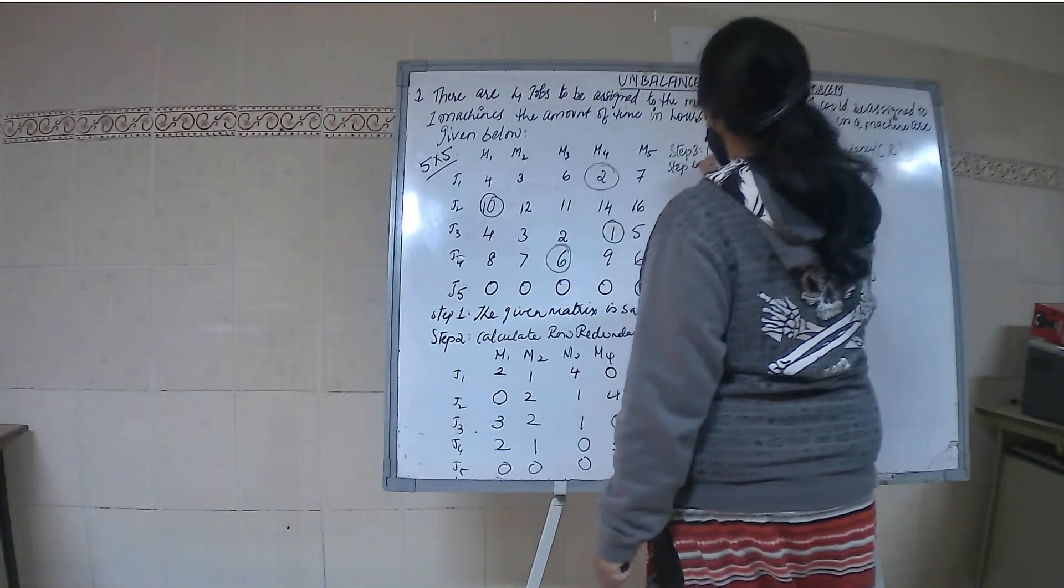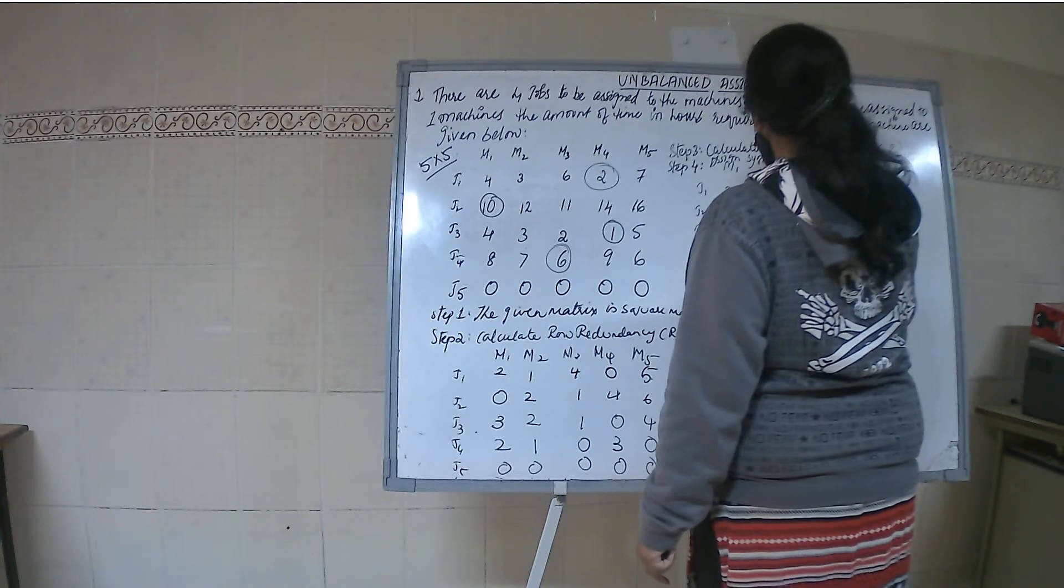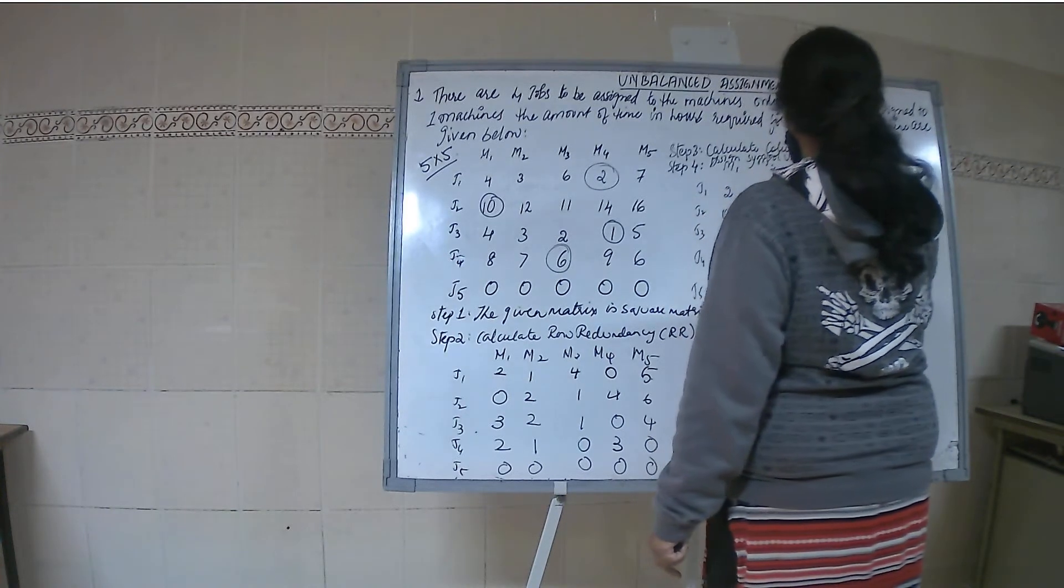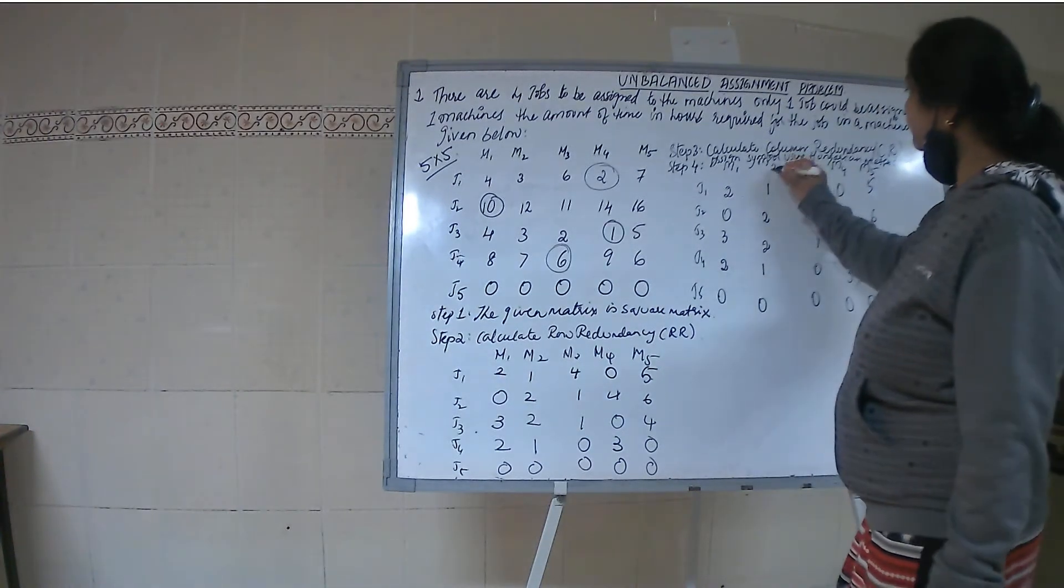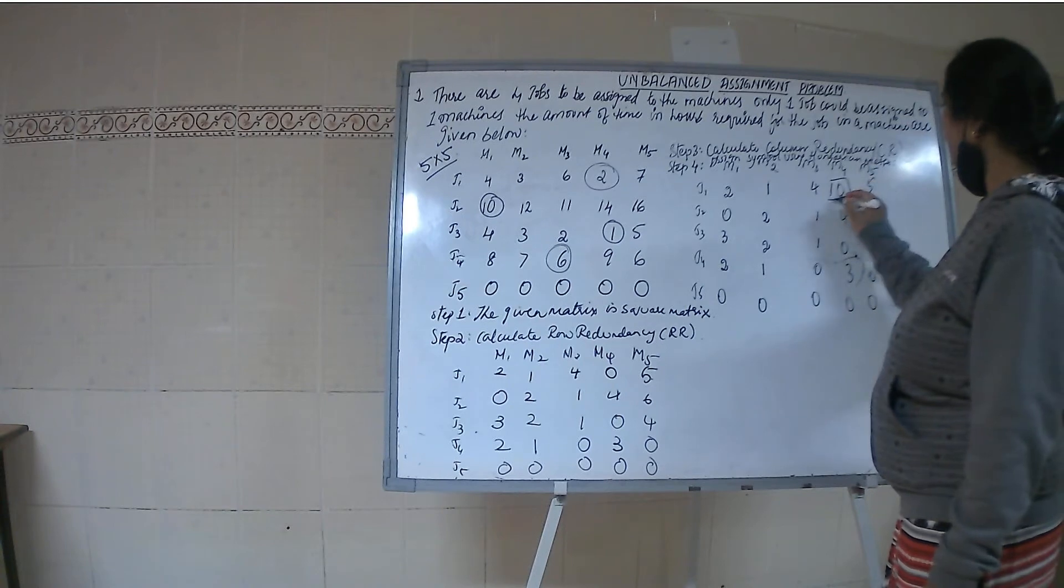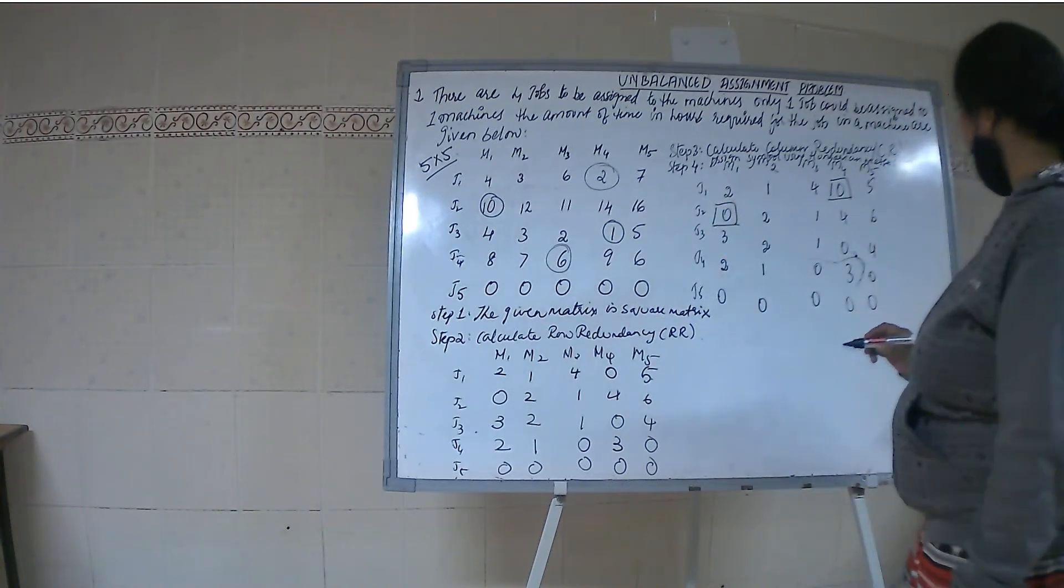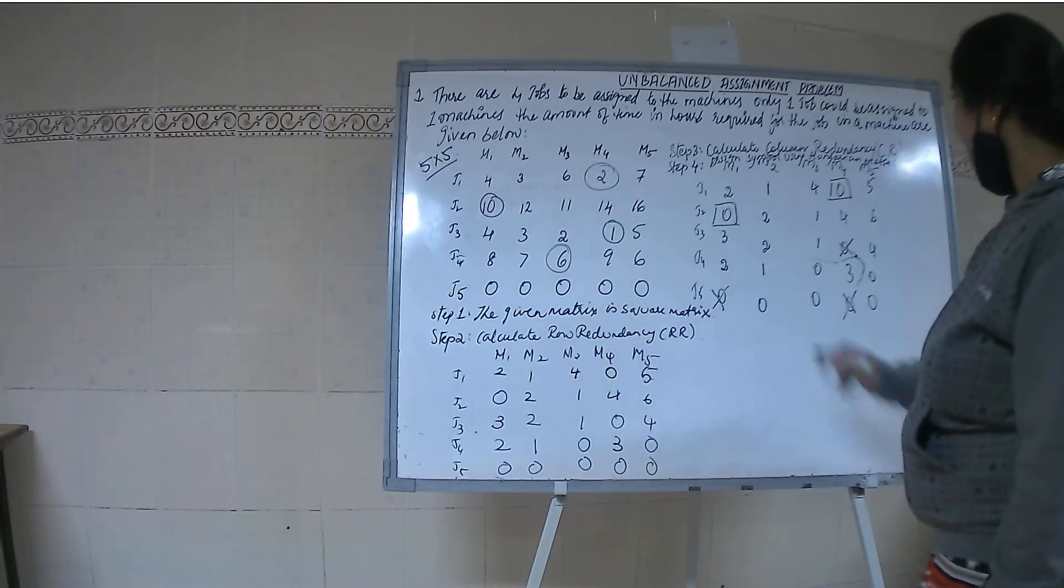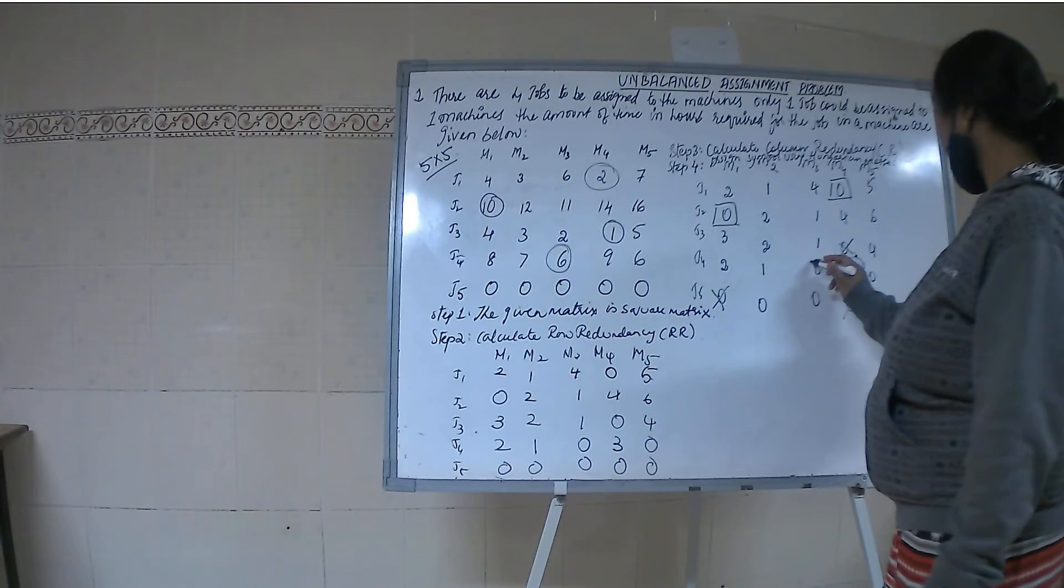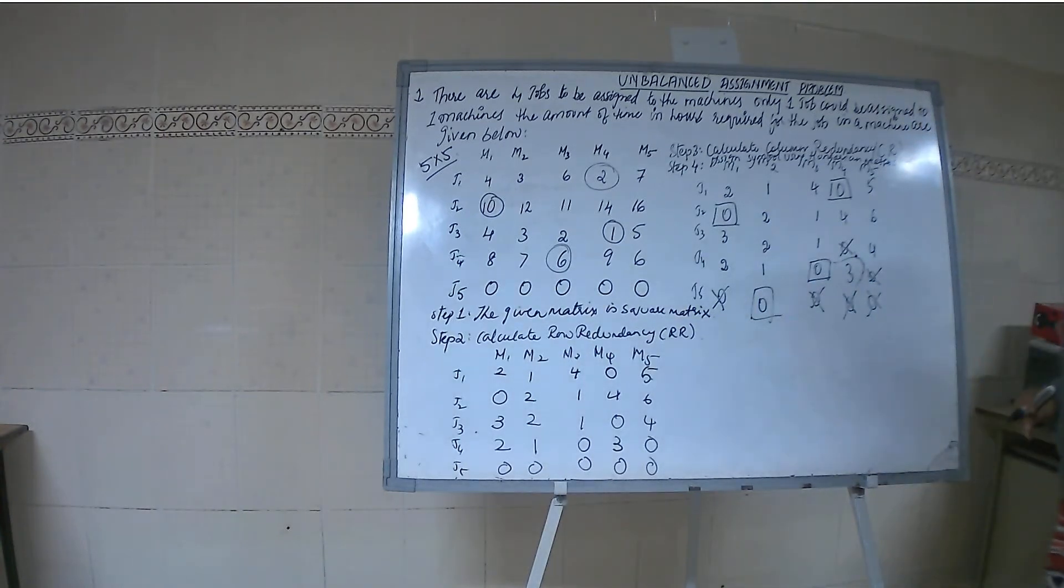Step 4: Assign using Hungarian method. Here only one zero is there in this row, I put the assignment to this. Second is here, I put the assignment and cancel these zeros. Then third row we don't have zeros. Fourth row, yes there is one zero, I am striking the rest. Fifth, I am putting it here. So the assignments are not balanced - there are only 4 assignments. Now you have to make it 5.